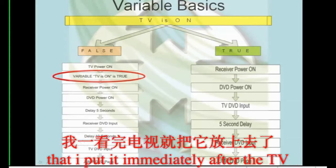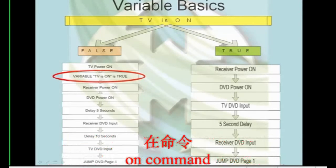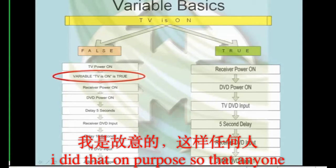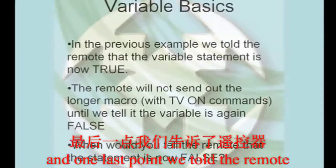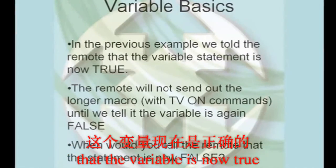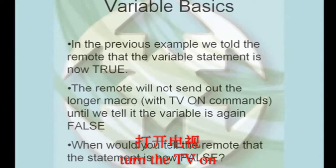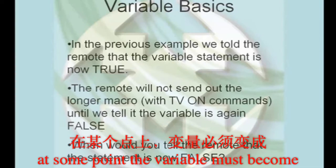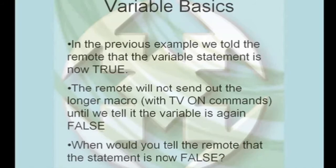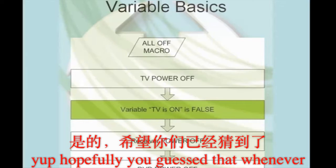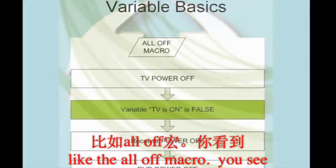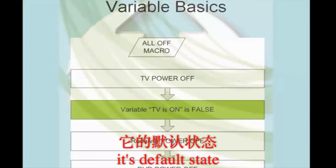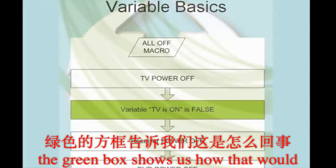Here's how that step would appear. Notice that it's placed immediately after the TVOn command — that way anyone who looks at your work can easily see why the variable was changed at that point. We told the remote that the variable is now true, which means the remote will not try to turn the TV on again. At some point, the variable must become false again — whenever we turn the TV back off, like in the all-off macro you see on screen, we must remember to tell the remote control that the variable has changed back to its default state. The green box shows us how that would appear in your macro.